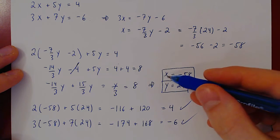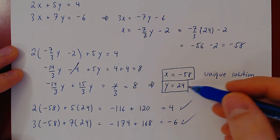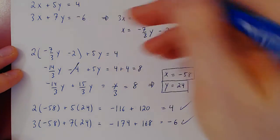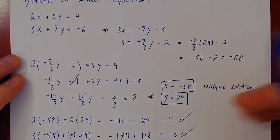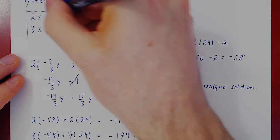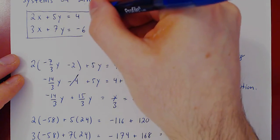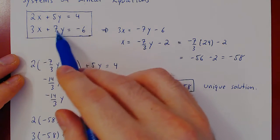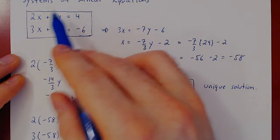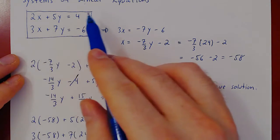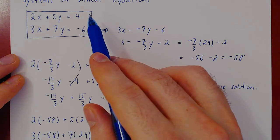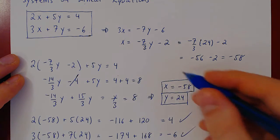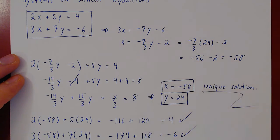So indeed, x equals negative 58 and y equals 24 is our unique solution to this linear system of equations, 2 equations and 2 variables. If we had eliminated this equation and only solved the first one, we would have obtained an infinite number of solutions. But because we have to satisfy both equations simultaneously, we only get a unique solution.